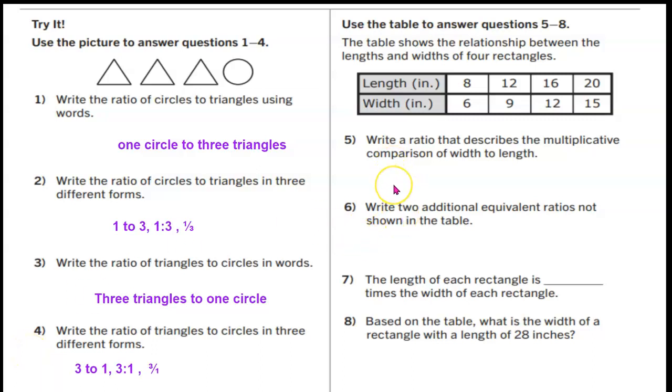So the multiplicative comparison is basically we're going to figure out what we are going to simplify this situation to. Remember that order matters and we're comparing width to length. So if I compare six to eight, that can simplify to three fourths. The multiplicative comparison is three fourths.